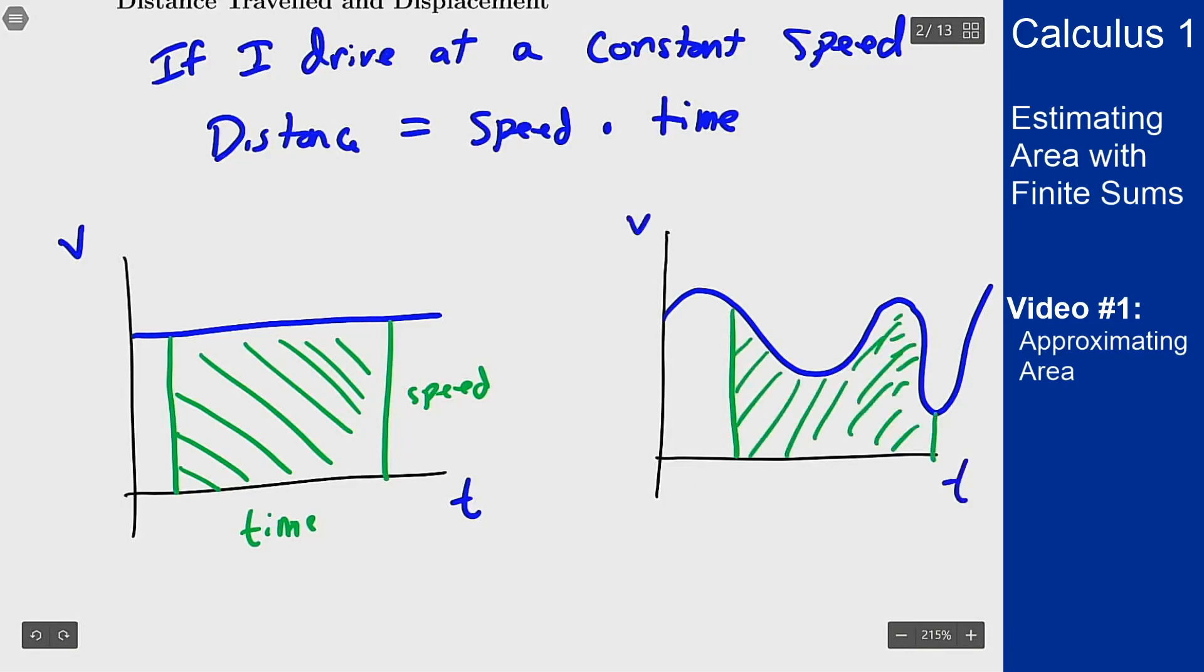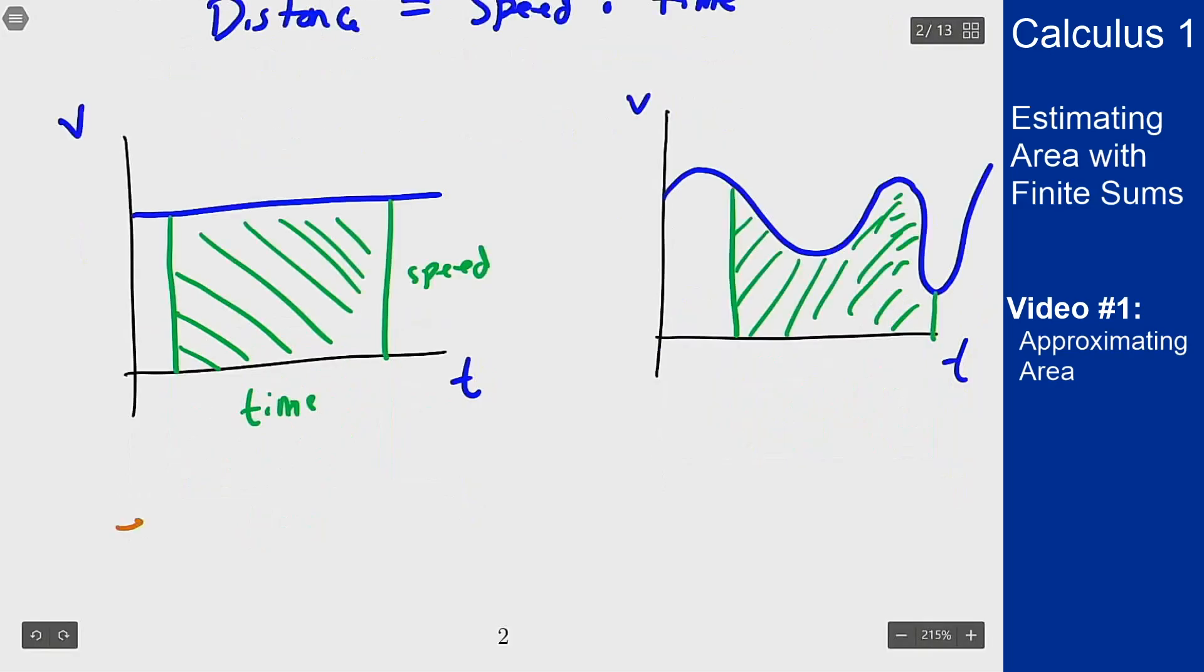In the same way that the area on the left gave me distance traveled, the area on the right will also give me distance traveled even though the speed is not constant. This was just multiplication but this one on the right we don't really have a technique for yet. There's no really nice way to find that area at this point.